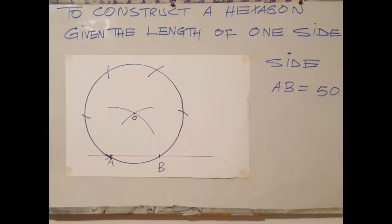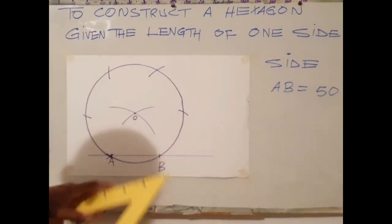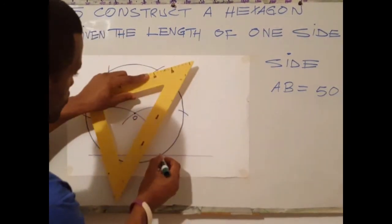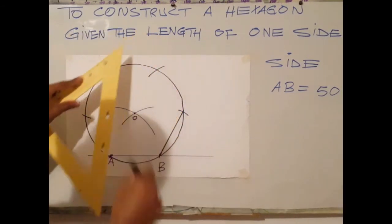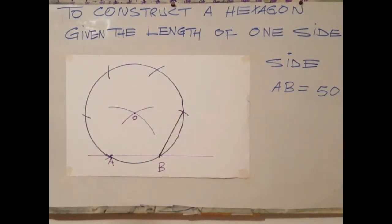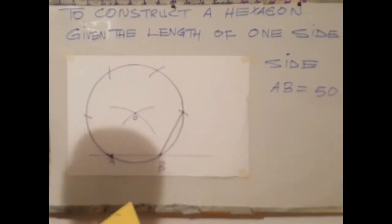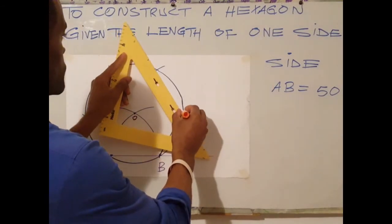The next step is to brighten up your figure. So brighten from B to the first point, here to there.